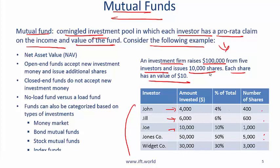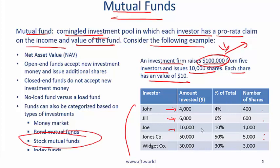The investment firm invests the $100,000 — for example, into stocks, making it a stock mutual fund. If the value doubles from $100,000 to $200,000 over the year, all shareholders benefit because their money doubles accordingly, with investment fees charged and their share increasing based on the value of the underlying stocks.